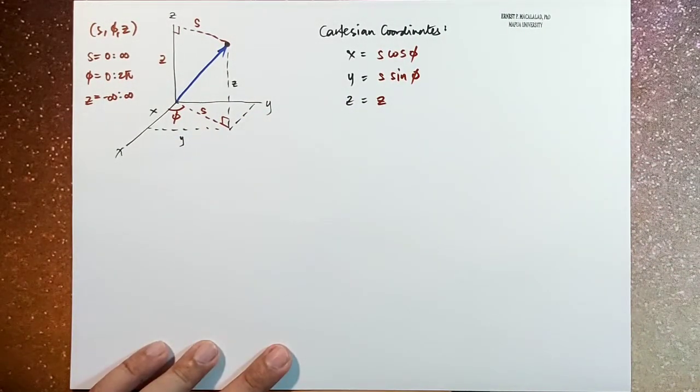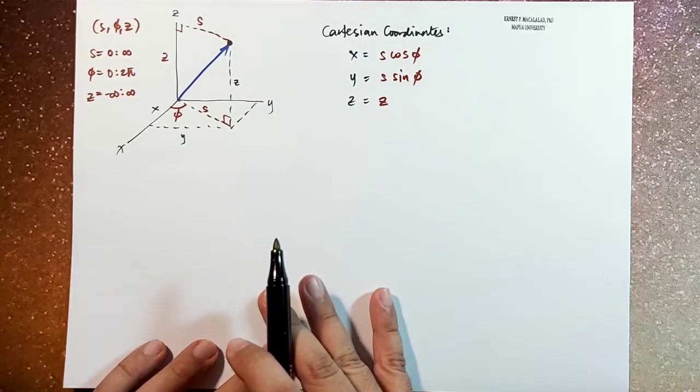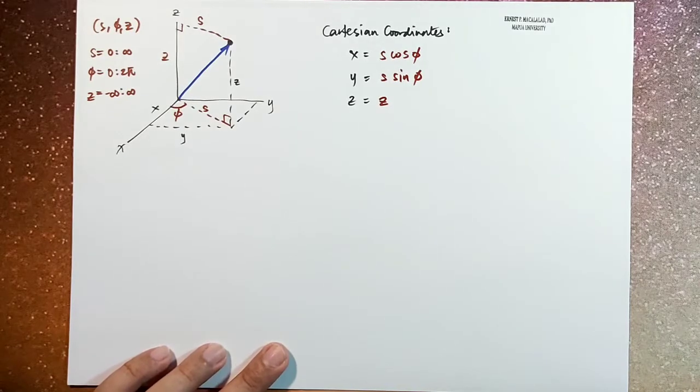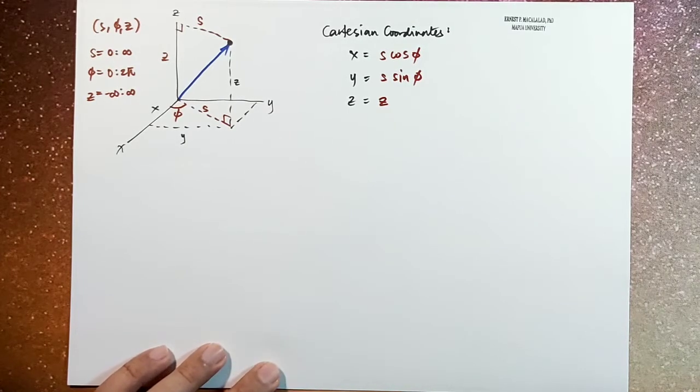The cylindrical coordinate system is actually used if the symmetry of your system is cylindrical. So this is used for systems like straight wire, cylindrical wire, or any system that has an axis, a straight line axis.